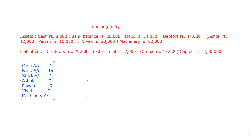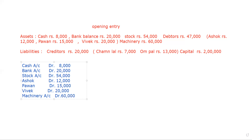So in the beginning of the year, their accounts will be debited in order for the balances. The debit amounts are: cash Rs. 8,000, bank Rs. 20,000, stock Rs. 54,000, Ashow (debtor) Rs. 12,000, Kaman (debtor) Rs. 15,000, Vivek (debtor) Rs. 20,000, and machinery Rs. 60,000. In this way, we have to debit all the amounts.